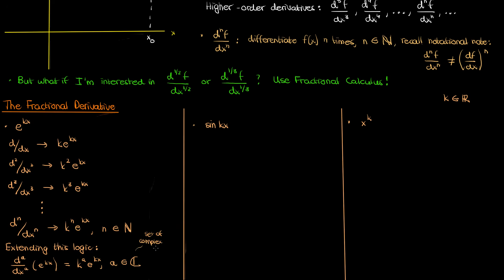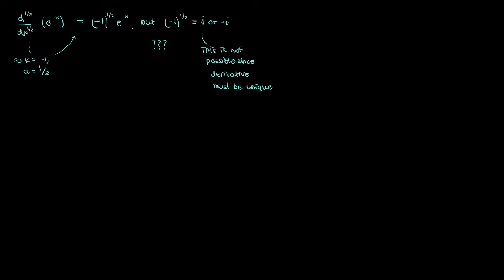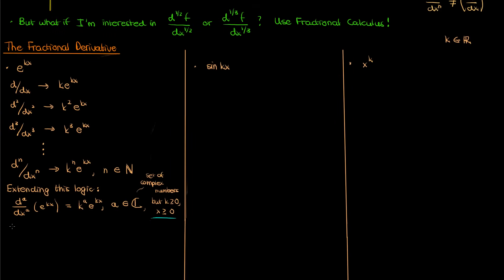The restriction with this definition is that both k and x cannot be negative. If we let x or k be negative, we run into problems with the uniqueness of our fractional derivative definition. For example, the half derivative of e to the negative x gives negative 1 to the half times e to the negative x, but negative 1 to the power half can be i or negative i, and we can't pick both. So we restrict both x and k to be non-negative, picking only positive roots.